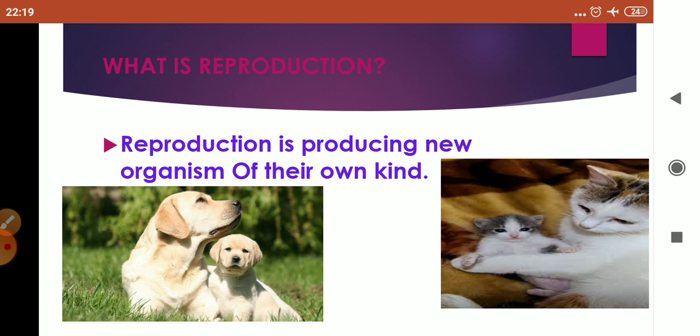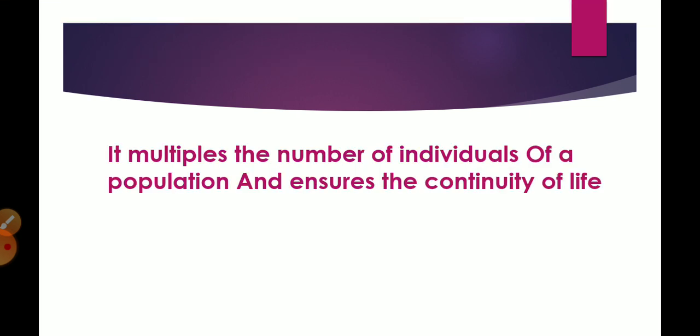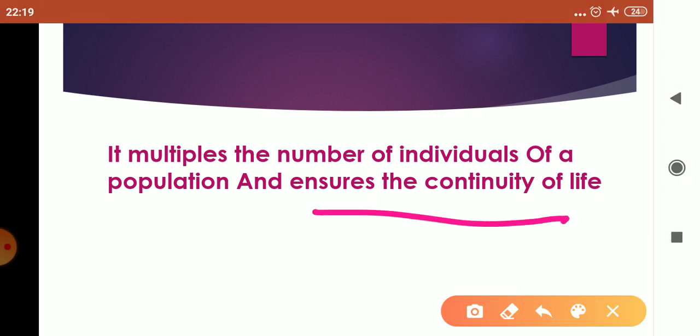Reproduction multiplies the number of individuals of a population. It increases the number of individuals and ensures the continuity of life. How does reproduction ensure the continuity of life? Or we can ask: what is the importance of reproduction?